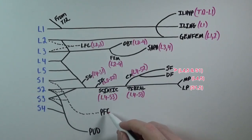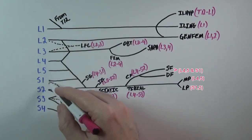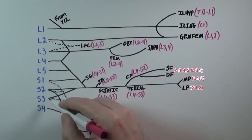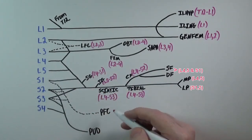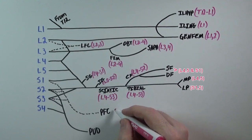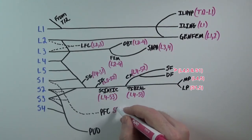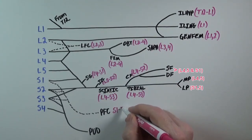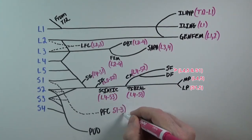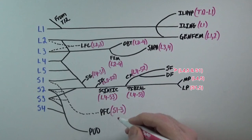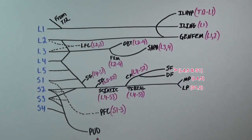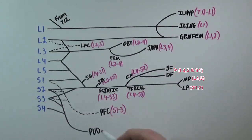The posterior femoral cutaneous nerve originates from S1, S2, and S3, as you can see. And finally, the pudendal nerve comes from S2, S3, and S4.